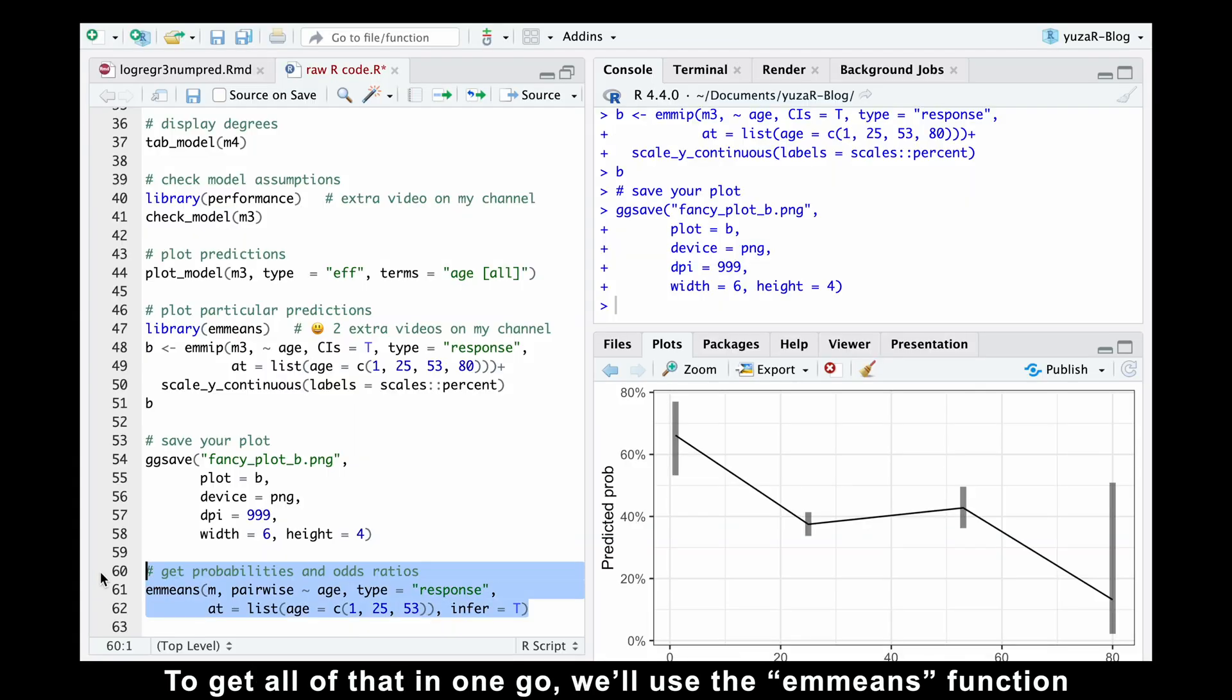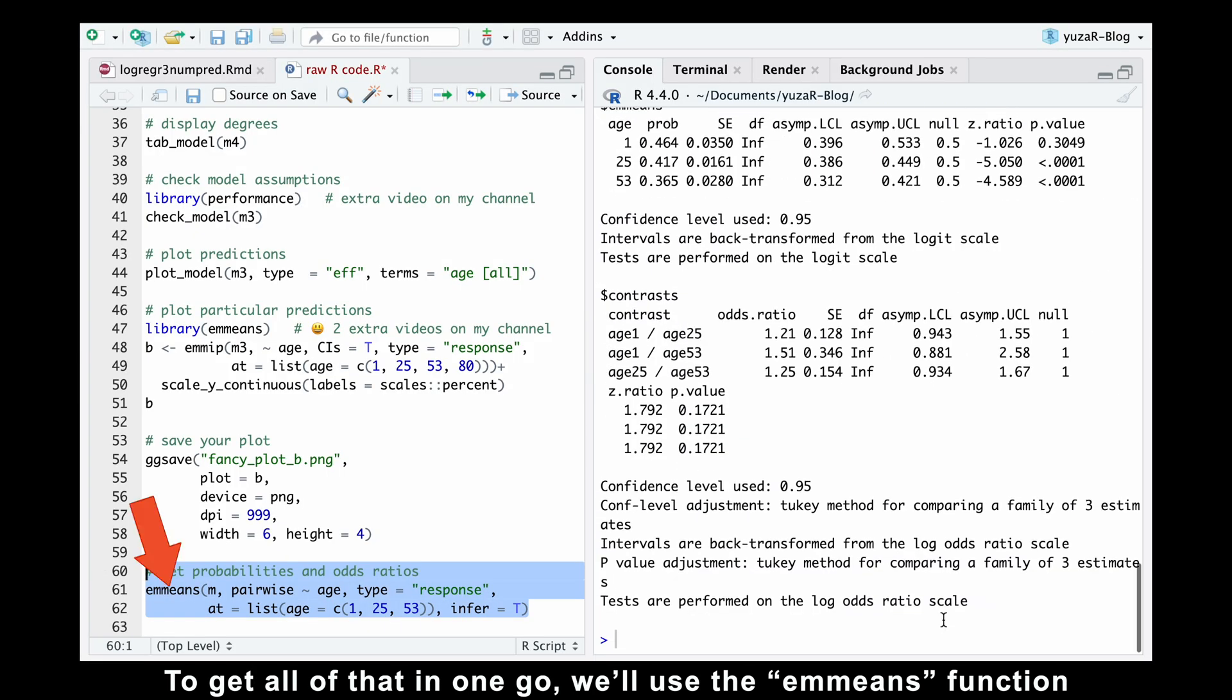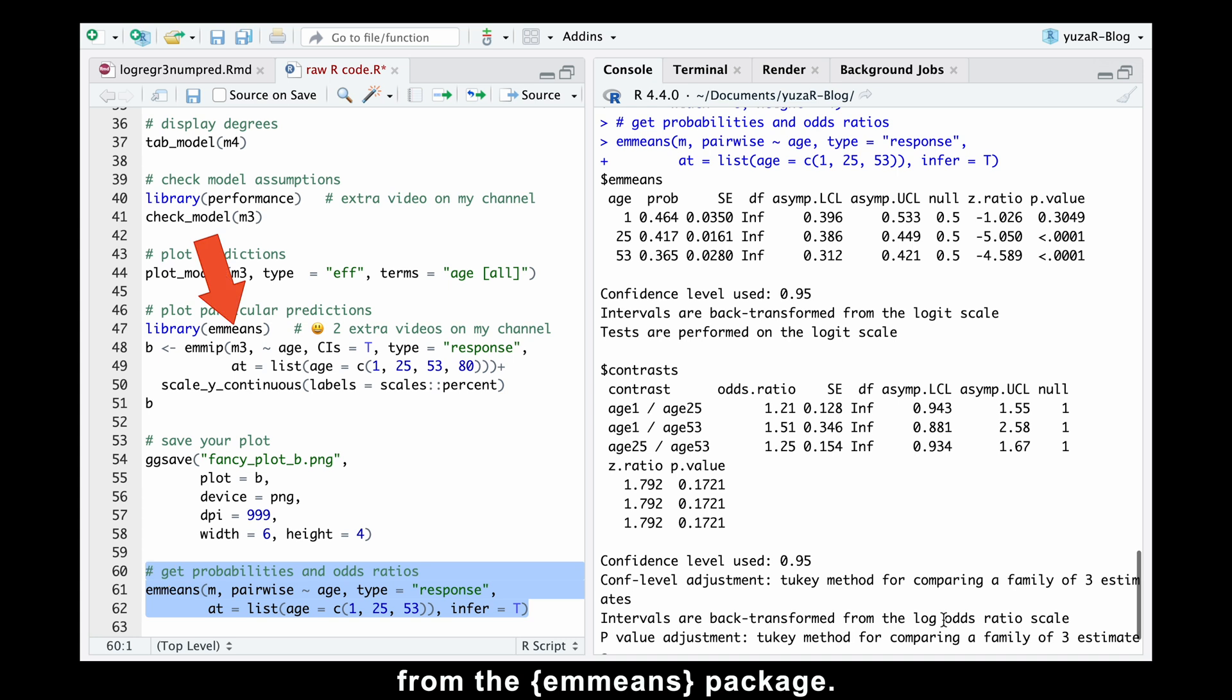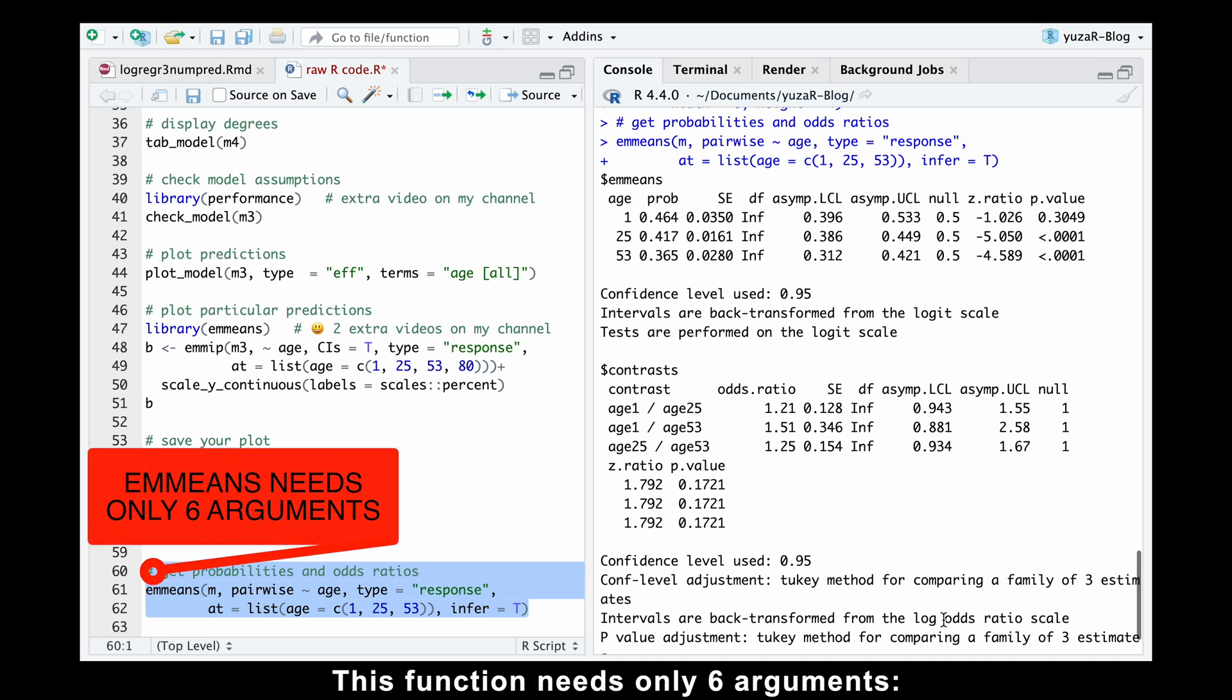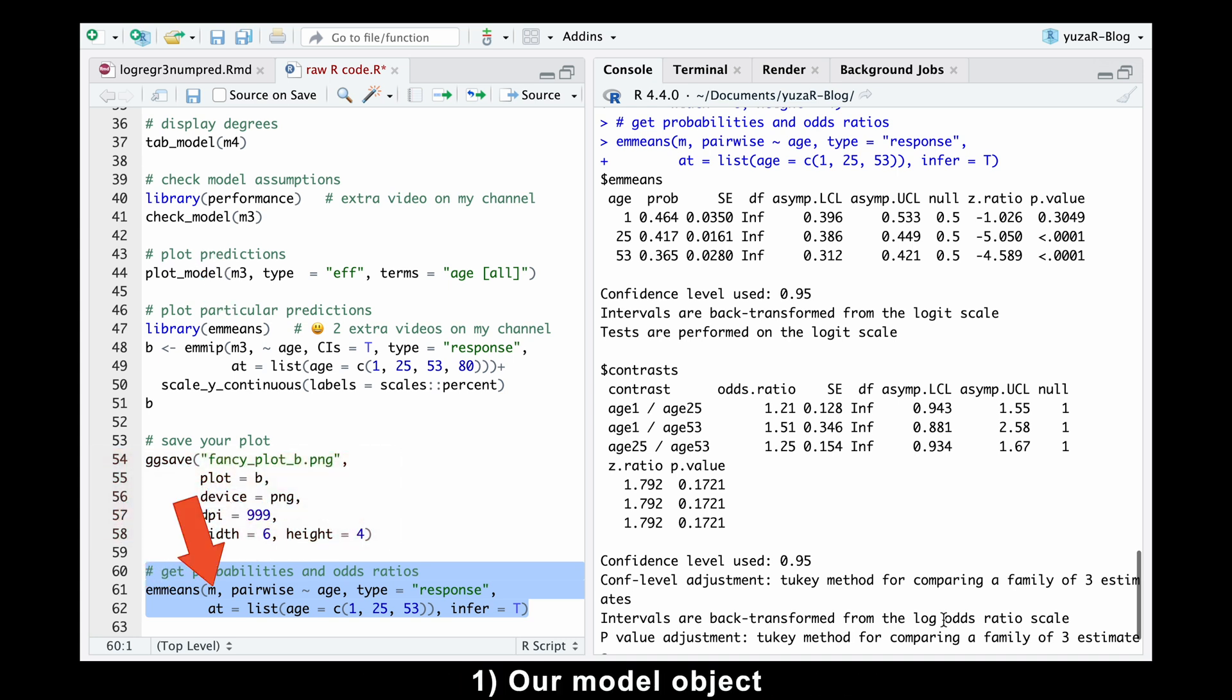To get all of that in one go, we'll use the emmeans function from the emmeans package. This function needs only six arguments. Our model object, the pairwise argument, which compares all ages between each other, the name of our predictor, the argument at, which allows us to determine the ages we want to compare,